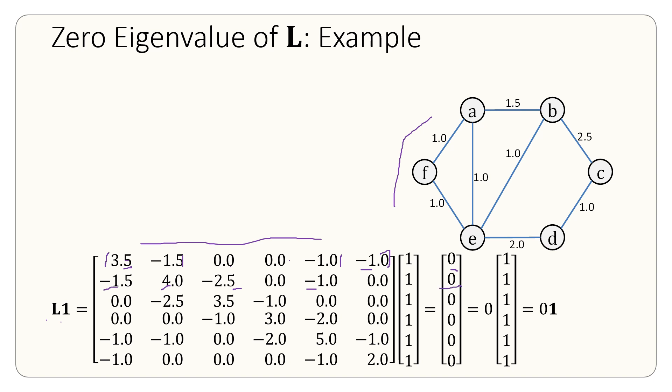So what we are doing is we are post-multiplying all the rows with this vector of all 1s and we get a vector of all 0s. A vector of all 0s is equal to 0 times a vector of all 1s, which is equal to 0 times 1. So L times 1 vector equals 0 times 1.